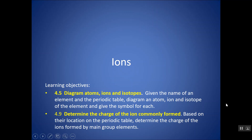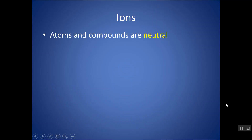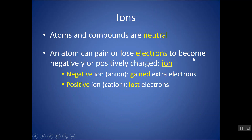In this video, we're going to take a look at ions. When you see the word atom and even compound, it implies that it's neutral. But atoms can gain or lose electrons, and then they can become positively or negatively charged. And then we call it an ion.